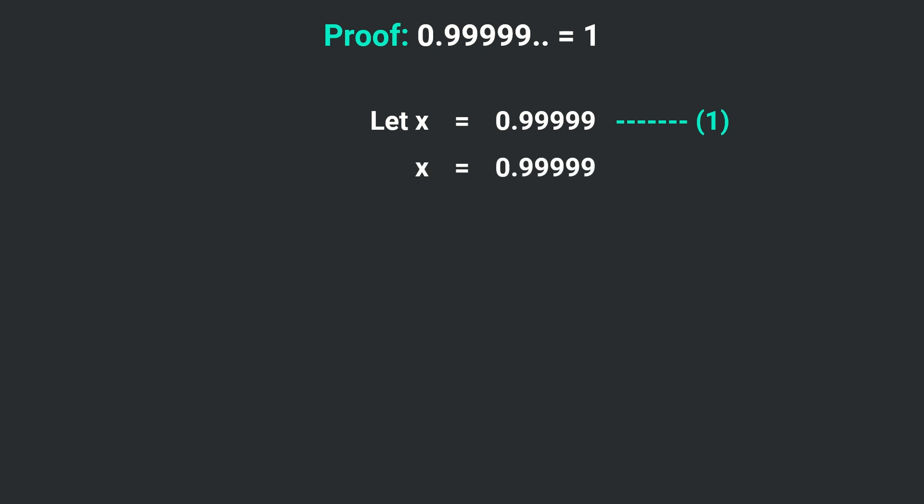We will multiply both sides by 10, so it will become 10x equals 9.99999. 10x will remain the same, and we can break 9.99999 into 9 plus 0.99999. Now using our first equation, we can replace 0.99999 with x.